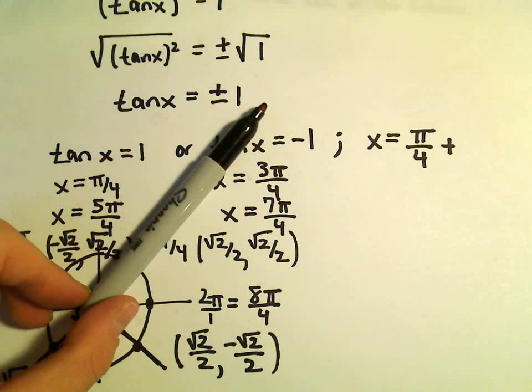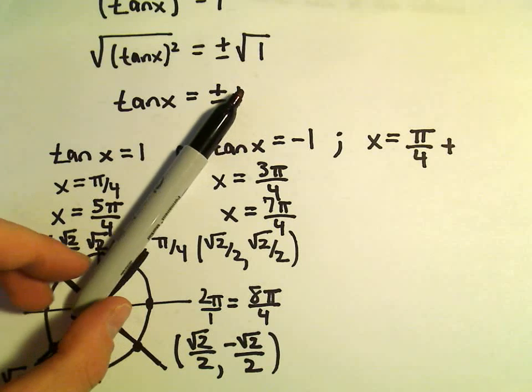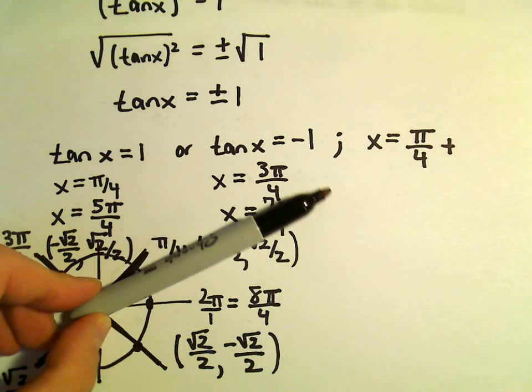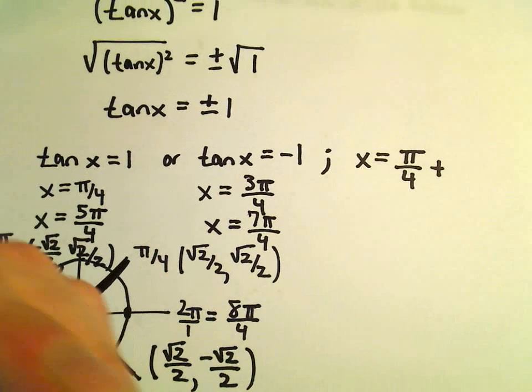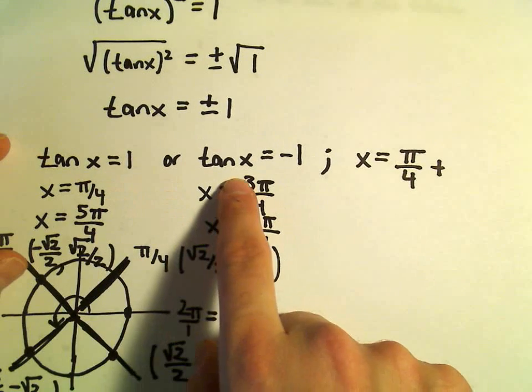Likewise, we could subtract pi over 2 radians. And that's just going to move us either sort of clockwise or counterclockwise. So I think we can say solutions to this equation, the original equation, tangent squared equals 1.